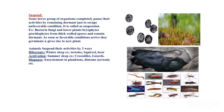Organisms which cannot regulate, cannot conform, and cannot migrate undergo a special process known as suspension — they suspend their body activities and remain dormant. Lower groups of organisms such as bacteria, fungi, bryophytes, and pteridophytes form thick-walled spores and remain dormant. As soon as favorable conditions arrive, they germinate and give rise to new plants.